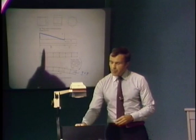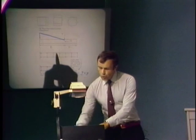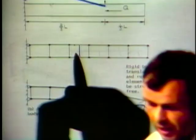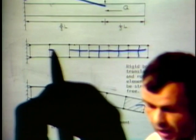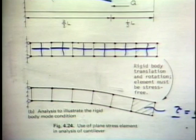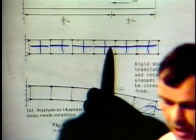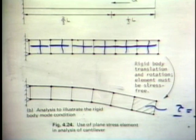The constant strain criterion is also necessary because, as we take more and more elements that become very small and approach a point, at a point we only have one constant stress. So the element must be able in the limit to represent a constant stress at a point. One way of finding out whether an element satisfies these criteria is to calculate its eigenvalues.